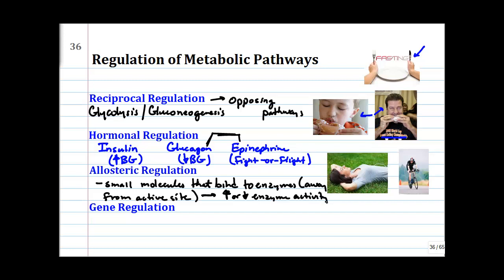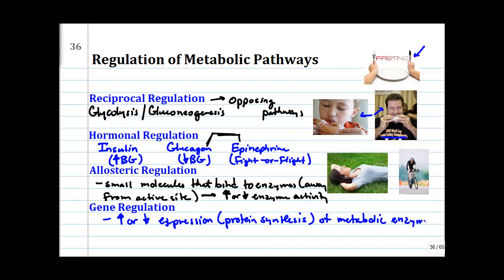The fourth type is gene regulation. We can increase or decrease the expression — i.e., protein synthesis — of metabolic enzymes. The best example of this is insulin. Insulin is going to have a hand in hormonal regulation of metabolism and also a very important role in gene regulation. This video is giving you the big picture.